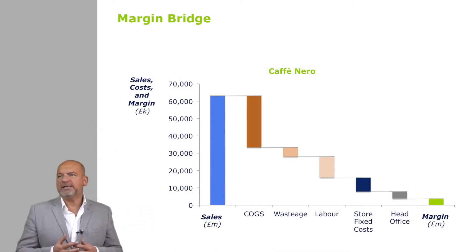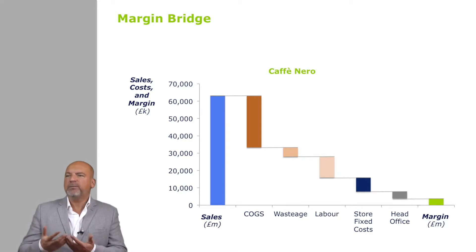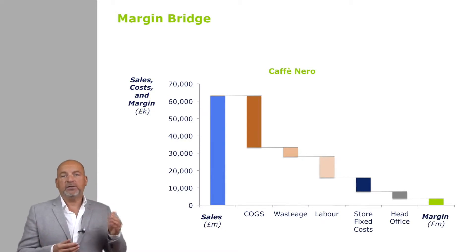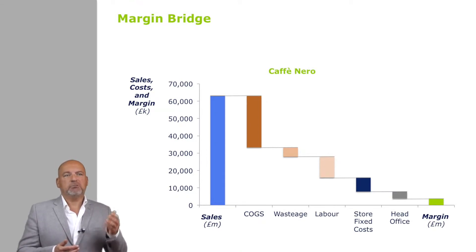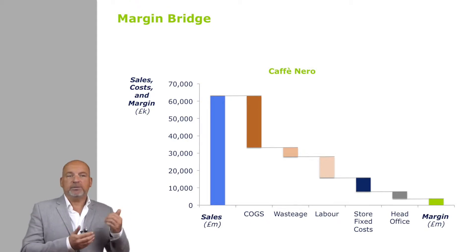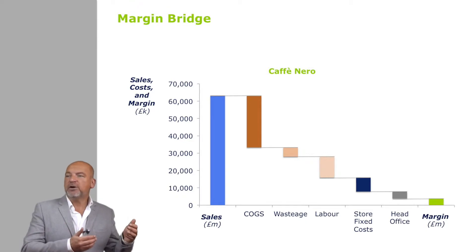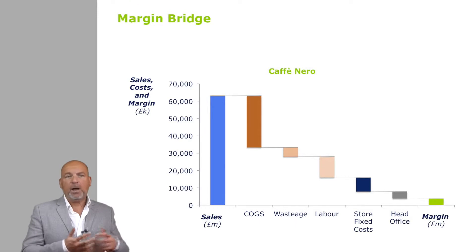Let's look at the first example. What we have here is a margin bridge for Caffe Niro, a retail chain of coffee bars. The first bar is sales, the second is COGS — you can see cost of goods is about 50% here. Then there's a bit of wastage, a bit of labor, some store fixed costs, some head office costs, and then the profit margin, the EBIT.